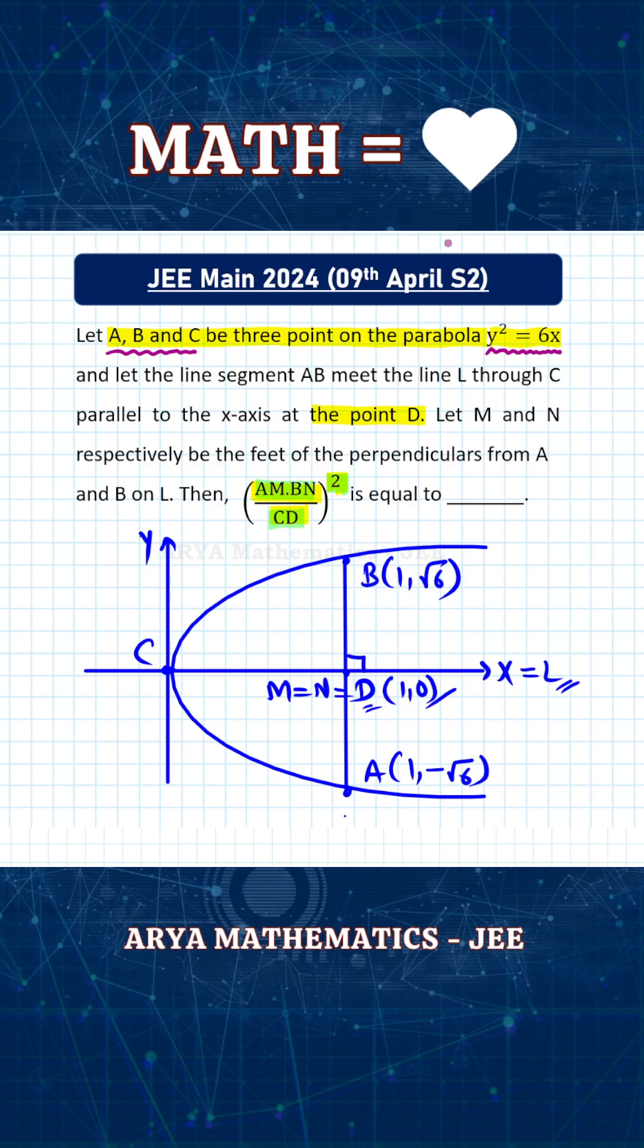So now basically we need the value of this quantity: AM × BN divided by CD². The value of AM where A is (1, -√6) and M is (1, 0), so the distance AM will be √6.